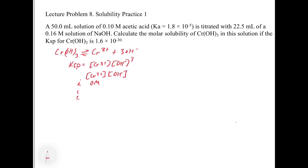The problem is we don't know what the OH⁻ concentration is. The only way we can get that is by looking at the titration, because at any point in the titration we can calculate the pH or pOH and therefore the OH⁻ concentration. We're reacting HA + OH⁻ to get A⁻ + H₂O. We calculate moles of acid: 50 mL × 0.1 M = 0.0050 moles.